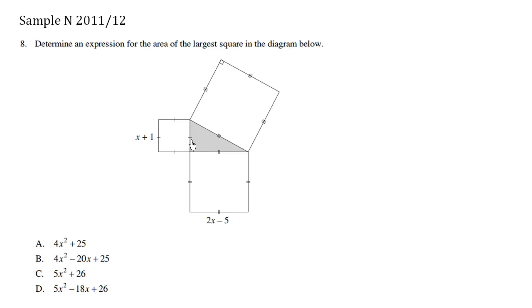So the length of this particular side here is x plus 1. This here is x plus 1. And the length of this particular side—you can see there's a double dash here and a double dash here, these are the same—is 2x minus 5.